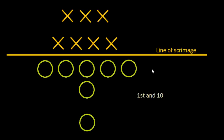Before the ball is snapped and the play has started, the defense has to stay on their side of the line of scrimmage and the offense has to stay on their side. It's not until the play starts and the ball is snapped from the center to the quarterback that the play begins. So, getting back to this whole 'first and ten' thing — what do these two numbers represent?